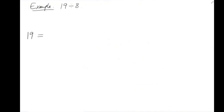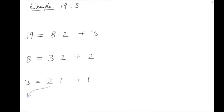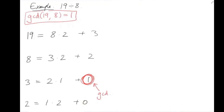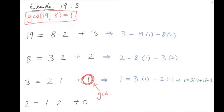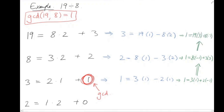Here's a simple example: 19 divided by 8. We get a quotient of 2 and a remainder of 3. Now we take 8 and 3 and repeat: 8 is 3 times 2 plus 2, and 3 is 2 times 1 plus 1, and 2 is 1 times 2 plus 0. We've hit 0, so 1 is our greatest common divisor. Rearranging and substituting, we get 1 is 19 times 3 plus 8 times minus 7. This is often called Bézout's lemma.